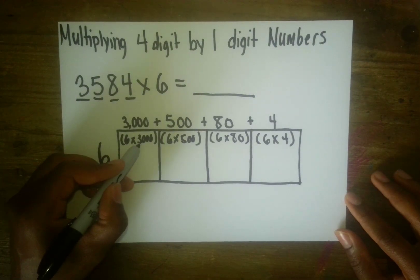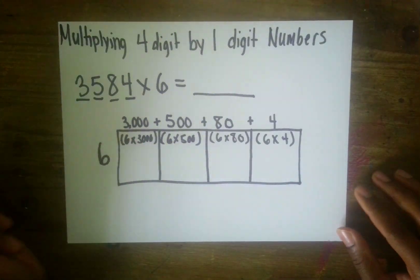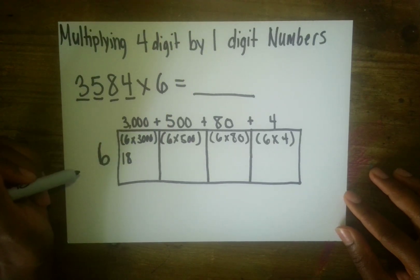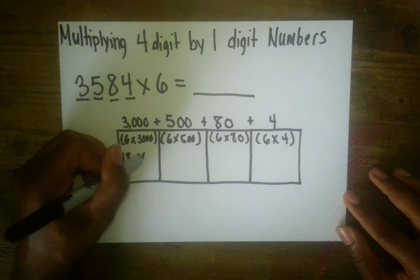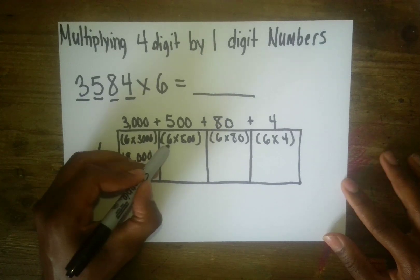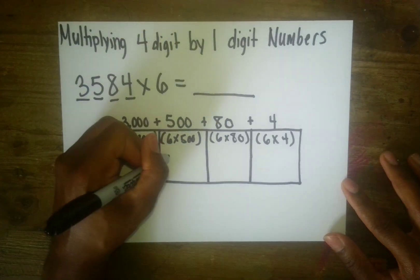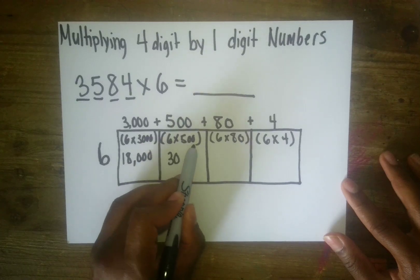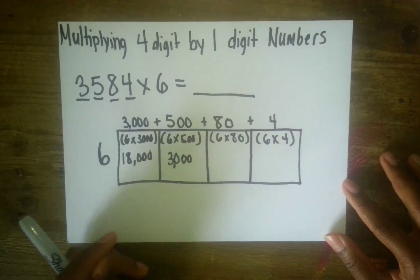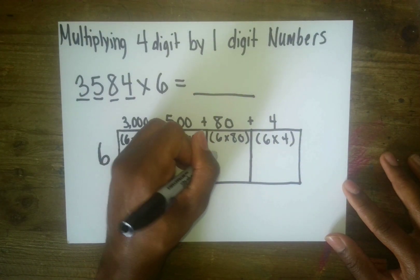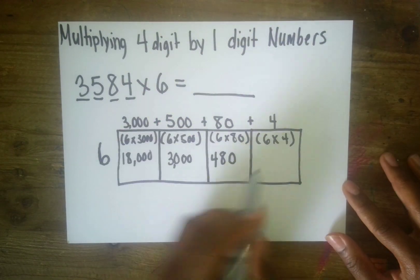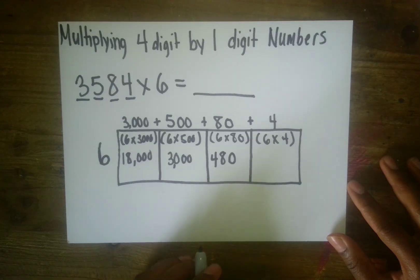For six times 3,000, all we really need to solve is six times 3, then add three zeros behind our answer. Six times three is 18, so that gives us 18,000. For six times 500, six times five is 30, and we add two zeros to get 3,000. Six times 80: six times eight is 48, add one zero to get 480. And six times four is 24.